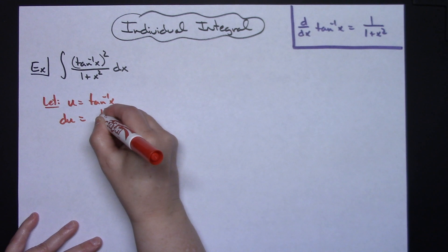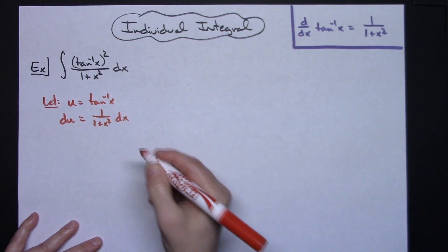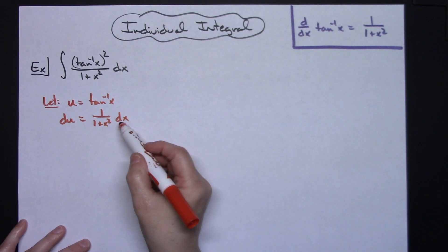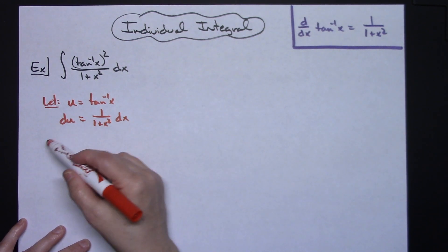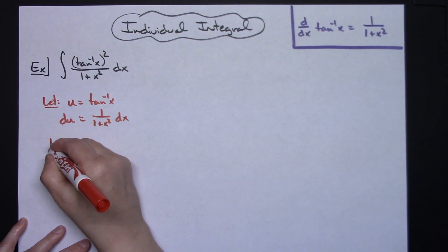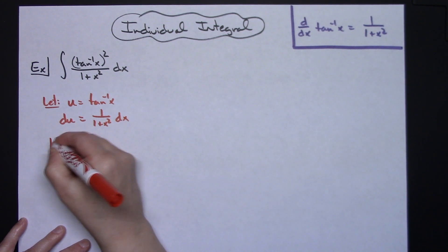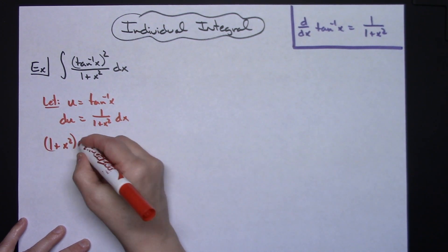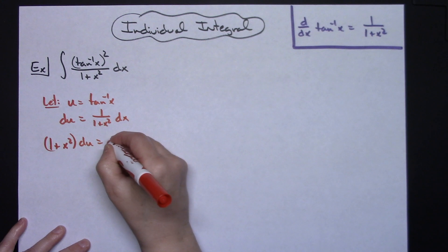Then I'm going to have 1 over 1 plus x squared dx. I'm going to solve for dx all the way down, so basically the reciprocal on the other side. So I'm going to have 1 plus x squared—keeping in mind that is a binomial—du equals dx.